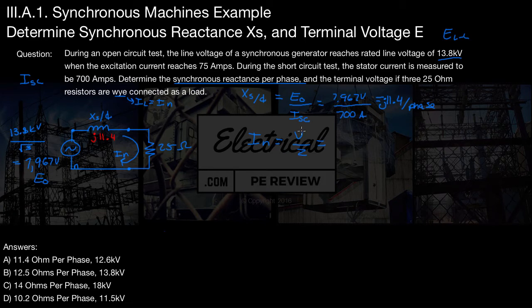Well, we already found our voltage. This is actually going to be our E0 value of 7,967 volts divided by, now for impedance, since this current right here is in series with two loads, we're going to have to add these together to get that equivalent current.